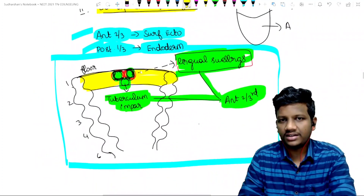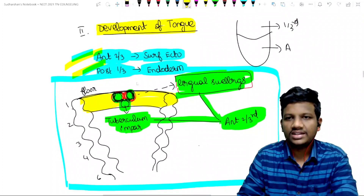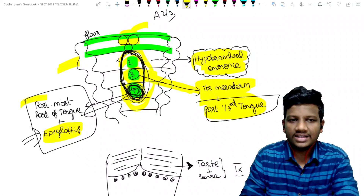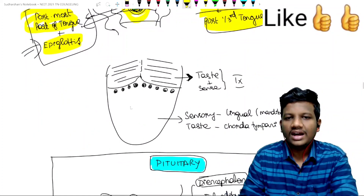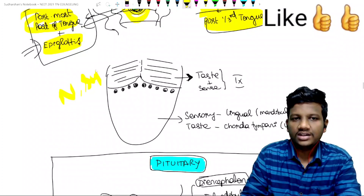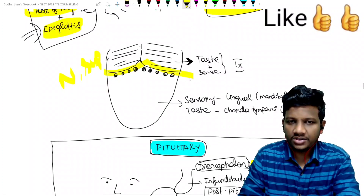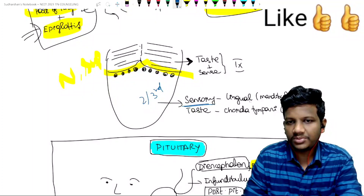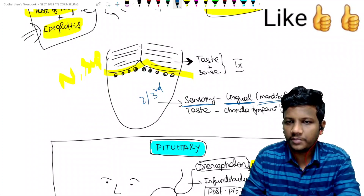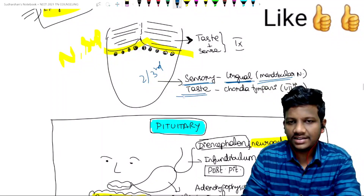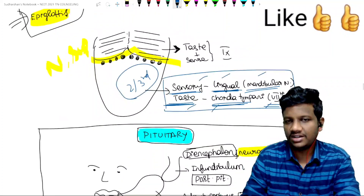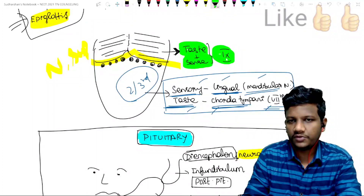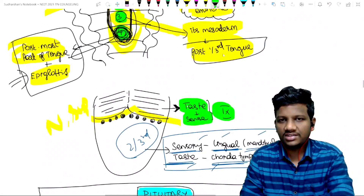For the nerve supply of the tongue: the sensory nerve supply of the anterior two-thirds is from the lingual nerve, a branch of the mandibular nerve. Taste sensation from the anterior two-thirds is carried by the chorda tympani nerve, which is the seventh nerve. For the posterior one-third, both sensory and taste sensation are carried by the glossopharyngeal nerve.